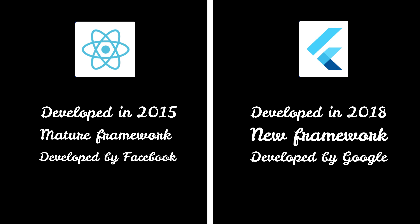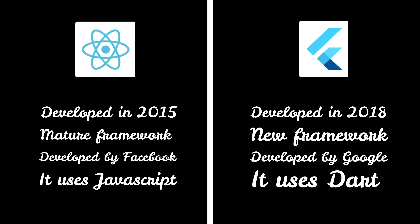Flutter uses the Dart programming language while React Native is a JavaScript framework. JavaScript is widely popular among developers — it is the third most popular language based on survey data. Dart is comparatively new; it is based on object-oriented principles just like Java and Kotlin, and has a limited community on the internet, but it is growing fast and becoming popular.